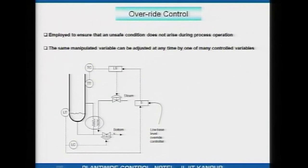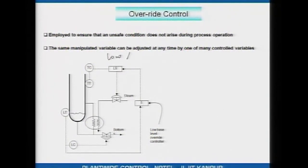Here is a simple example — the bottom of the stripping section of a distillation column. You have the reboiler which is taking in steam, and this steam is causing vapour to boil up. Ordinarily, the steam valve is moved by the temperature controller. The LS here is actually a low select — it takes in the signal output of the temperature controller as well as another signal I will explain shortly.